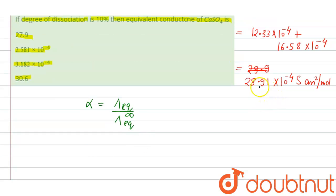So put this value in the given formula. The value of alpha is 0.1, which is equals to lambda equivalent divided by 28.91 into 10 raised to the power minus 4. So equivalent conductivity will be equal to 28.91